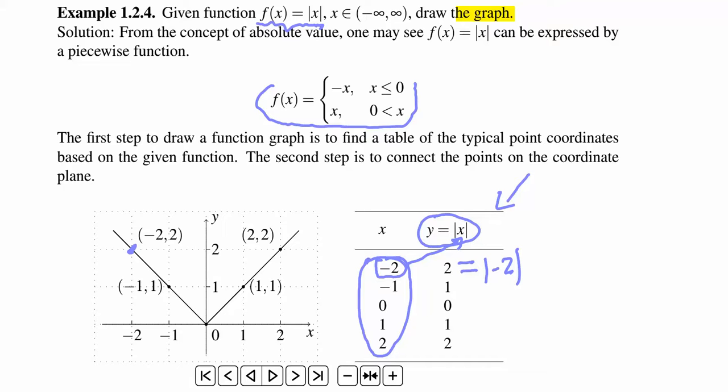Similarly, when you choose x equals negative 1, so you have a negative 1 absolute value, which is 1. So negative 1, 1 is on the graph.